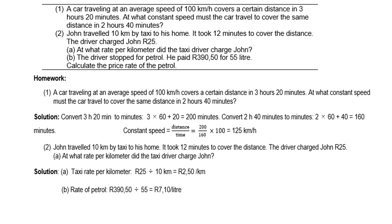John traveled 10 kilometers by taxi to his home. It took 12 minutes to cover the distance. The driver charged John 25 Rand. At what rate per kilometer did the taxi driver charge John? The taxi rate per kilometer is 25 divided by 10, which is 2.50 Rand per kilometer. The driver stopped for petrol and paid 390 Rand and 50 cents for 55 liters. The petrol price rate is 390.50 divided by 55, which gives 7 Rand 10 cents per liter.